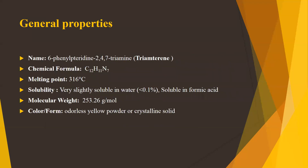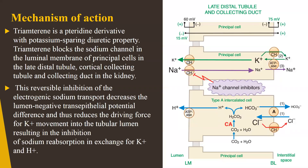Regarding general properties: the IUPAC name is 6-phenylpteridine-2,4,7-triamine and the chemical formula is C12H11N7. The melting point is 316°C, solubility is very slightly soluble in water and soluble in formic acid, molecular weight is 253.26 g/mol, and it is an odorless, pale yellow crystalline solid.